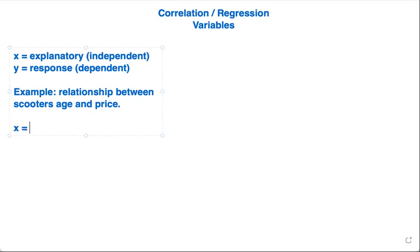It would make more sense that the x, the explanatory, is going to be age and the response is going to be price in this case.